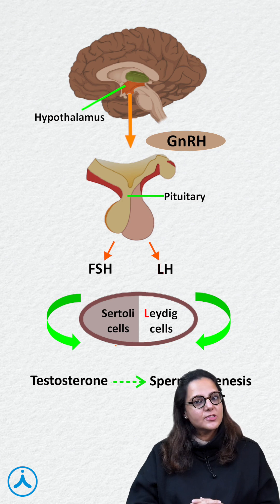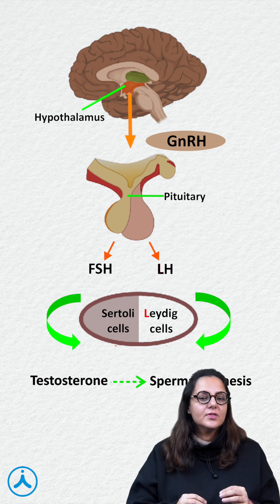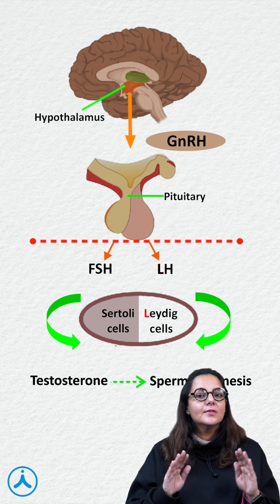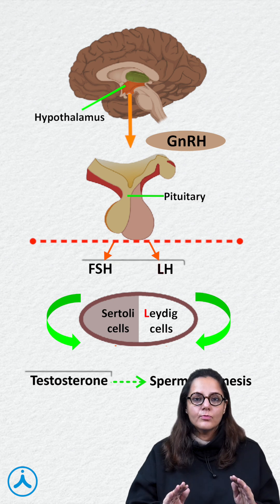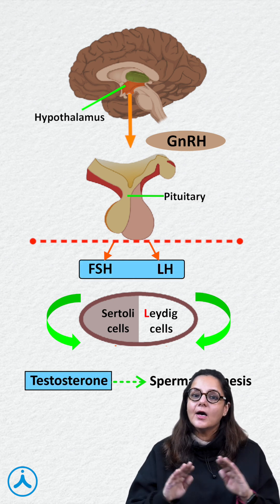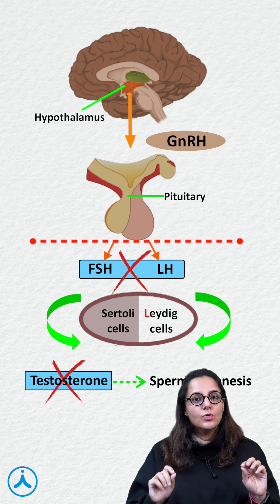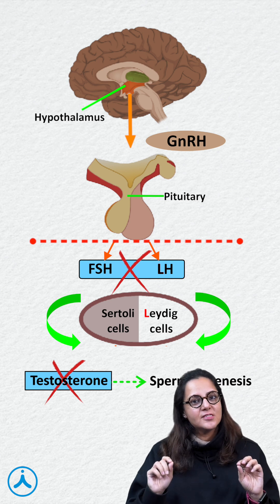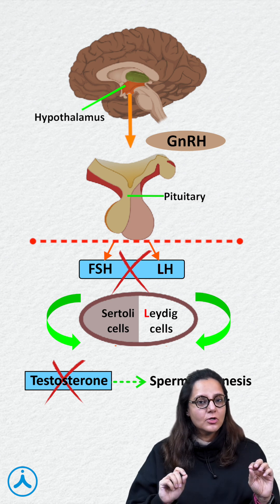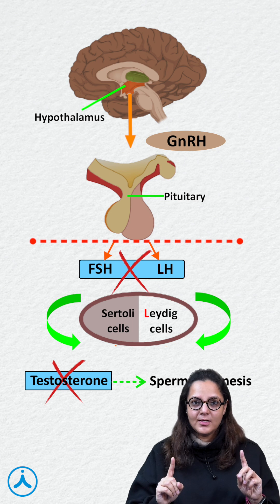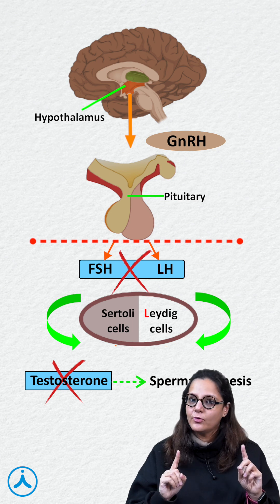From our discussion so far, we know that if there is any problem at the hypothalamus or pituitary level, then all the hormones at or below that level are not going to be formed. So LH, FSH, and testosterone will all be low. This is known as pre-testicular failure or hypogonadotropic hypogonadism.